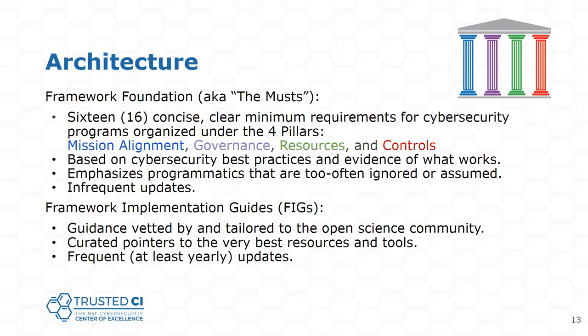We would like to have early adoption by a diverse set of stakeholder institutions and achieve acceptance by NSF project leads, CIOs, and CISOs. The architecture consists of 16 concise, clear minimum standards — musts — for a cybersecurity program organized under four pillars. These are based upon cybersecurity best practices and evidence of what works. We emphasize the program and not the controls, and we would expect these musts to have very infrequent updates. We would then produce framework implementation guides, with the first one being for large facilities and major NSF facilities. Guidance would be vetted and tailored to the open science community, with yearly updates to the implementation guides.